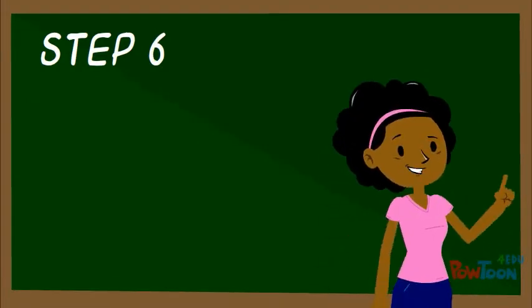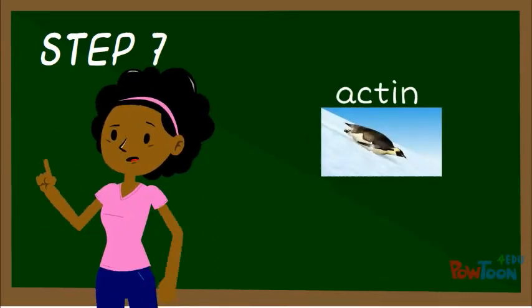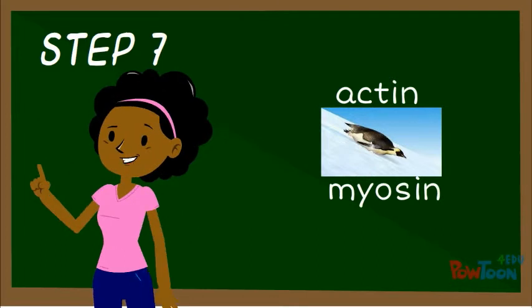Now that the tropomyosin has moved, myosin can bind to actin. Actin will slide over myosin and the sarcomere will contract.